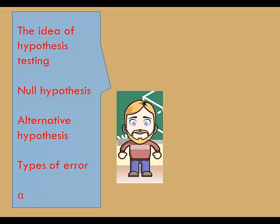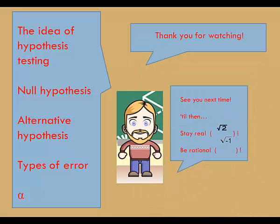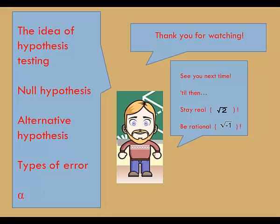So that's the basic idea of hypothesis testing. It works similar to an American criminal trial. There are two opposing hypotheses: a null hypothesis and an alternative hypothesis. The possible decisions are reject the null hypothesis or fail to reject the null hypothesis. If we reject the null hypothesis when it is in fact true, that's a Type 1 error. The risk of a Type 1 error is alpha, the level of significance of the test. Thank you for watching and have a great day. Until next time, stay real and be rational.